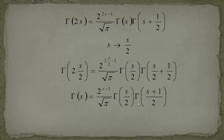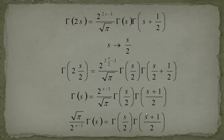In the right-hand gamma term we put them together and write gamma of (s+1)/2. The final step is bringing the 2 to the s minus 1 and the square root of pi into the denominator, so the square root of pi moves to the numerator on the right-hand side. We are left with this expression.